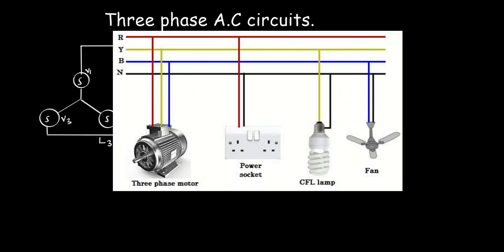The same goes for the lamp and the fan. Most appliances we use at home require power from a single-phase source, because using a three-phase source could cause damage to the device. The power socket taps from phase one, the lamp from phase two, and the fan from phase three. This explains why sometimes in a locality some people will have electricity and others will not — it can be due to the phase connections. People having light may be connected to a different phase, so a problem with one phase will not affect the other.